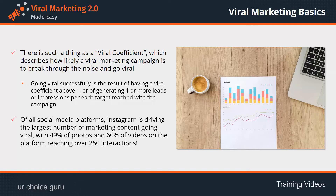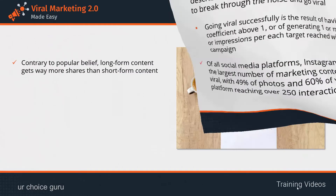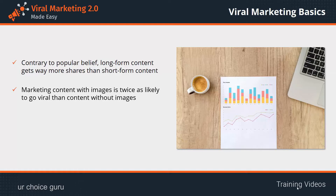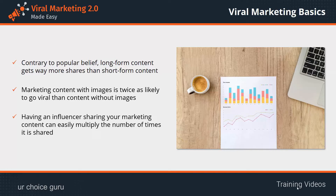In contrast, Facebook posts have a hard time reaching page fans, with only 6% of them seeing potentially viral page-promoted content. Contrary to popular belief, long-form content gets way more shares than short-form content, with content that is 3,000 to 10,000 words long getting over 1,000 more shares than shorter content. Marketing content with images is twice as likely to go viral than content without images. Having an influencer share your marketing content can easily multiply the number of times it is shared. You don't have to convince Oprah — it will be enough to reach a person who can multiply shares by at least two for every person he or she reaches.